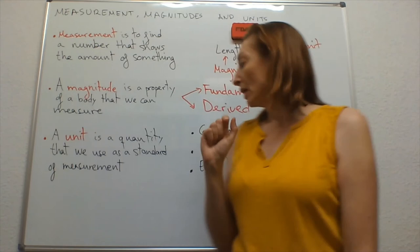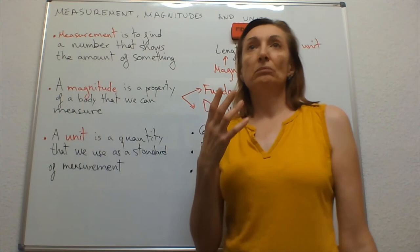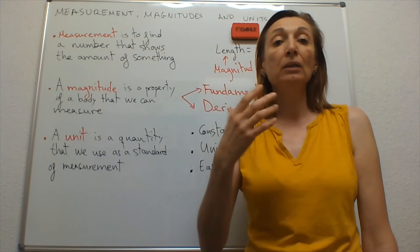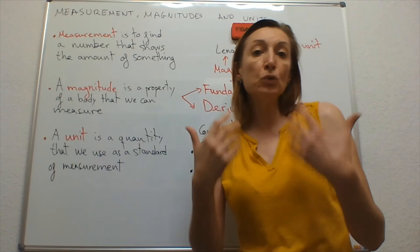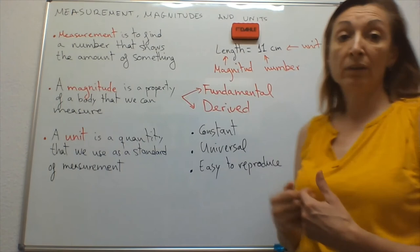It must be universal. It must be a unit that must be known by everybody in order that everybody can know it and use it. If we use a unit here in Murcia, we might use another unit, for example, for length.